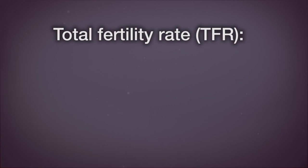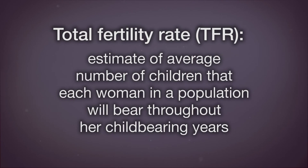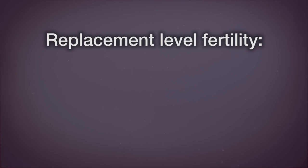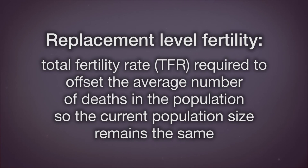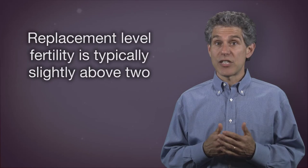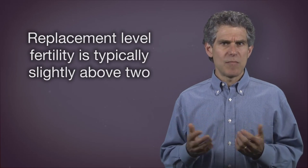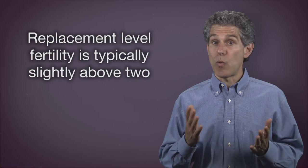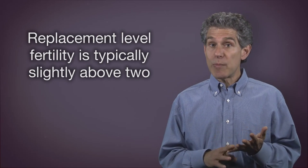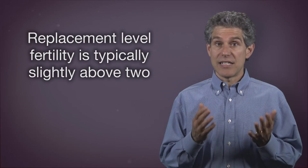Total fertility rate, TFR, is an estimate of the average number of children that each woman in a population will bear throughout her childbearing years. Replacement level fertility is the TFR required to offset the average number of deaths in a population so that the current population size remains the same. Replacement level fertility is typically slightly above 2 — in most developed countries it's 2.1. This number depends on rates of pre-reproductive mortality, that is, infant and child mortality rates, and some other factors.